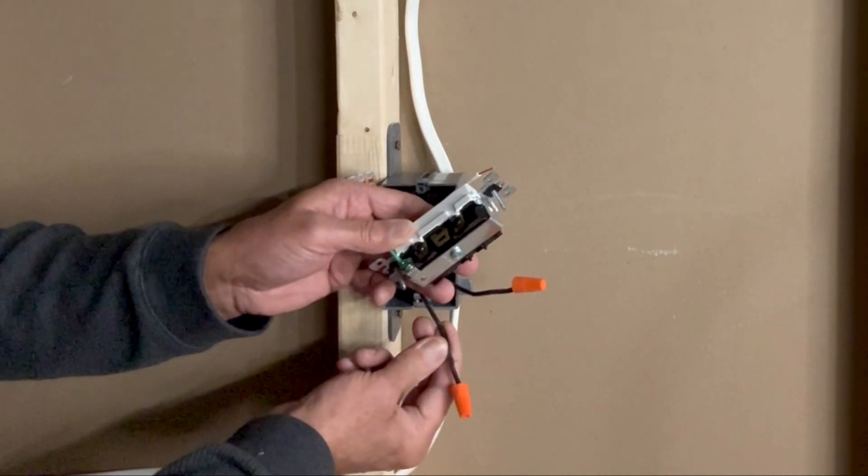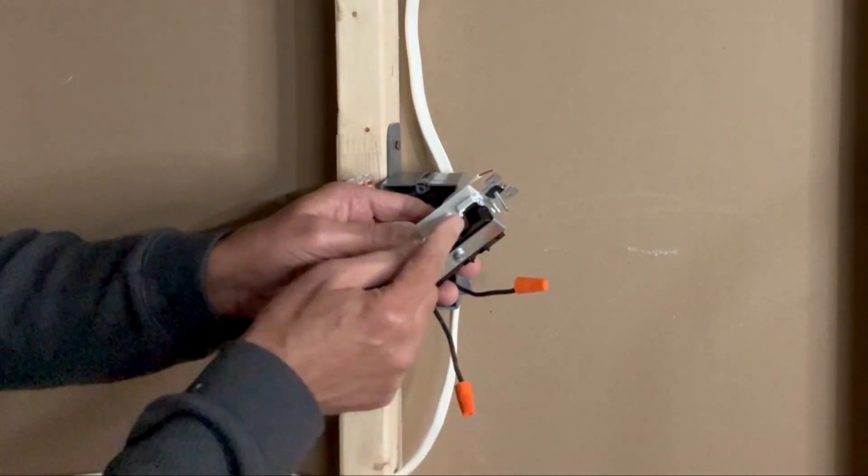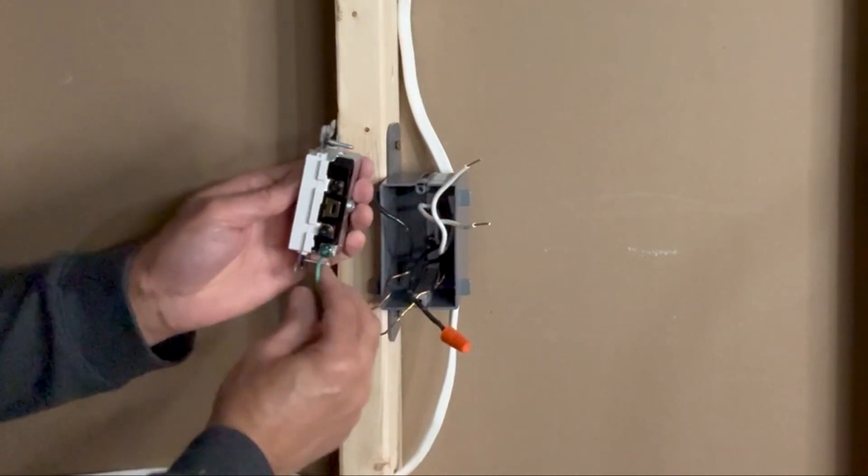I will now connect the ground terminal. This black wire at bottom is my power in. I will connect this to one of these two black screws. Ground is connected.